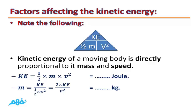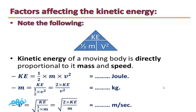Mass equals kinetic energy over half times velocity squared, or 2 times kinetic energy over velocity squared, and the measuring unit of mass is kilogram. To calculate velocity, we take the square root of kinetic energy over half times mass, or the square root of 2 times kinetic energy over mass, and the measuring unit of velocity is meters per second.